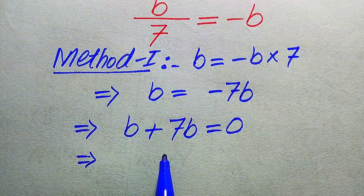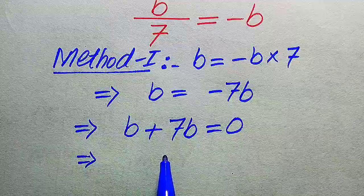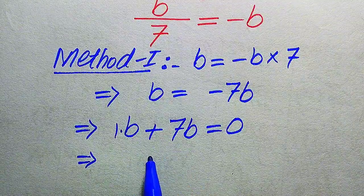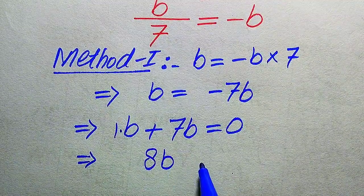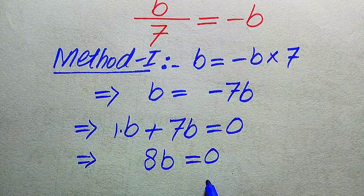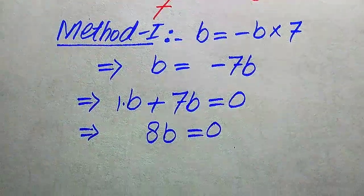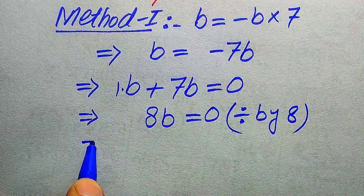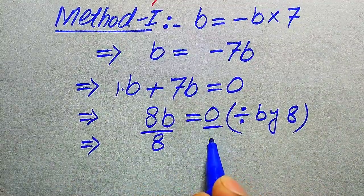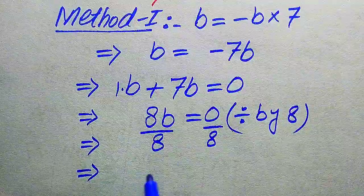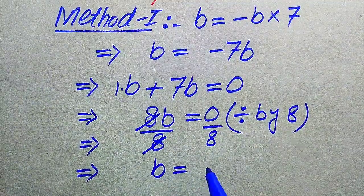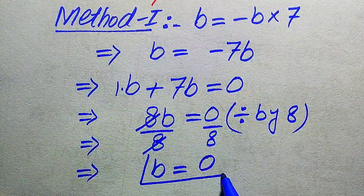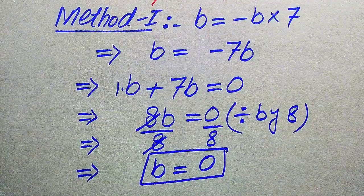These are two like variable terms, so we add their coefficients: the coefficient of the first term is 1 and of the second is 7. Adding them gives 8b equals 0. In the next step, we remove the 8 from the left hand side by dividing both sides by 8. The 8 cancels out, and we get b equals 0 divided by 8, which equals 0.